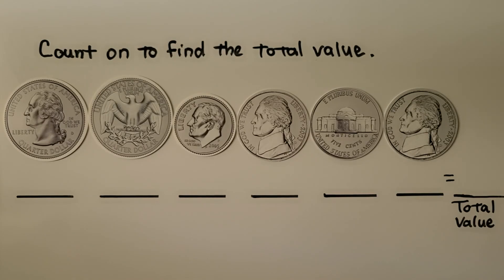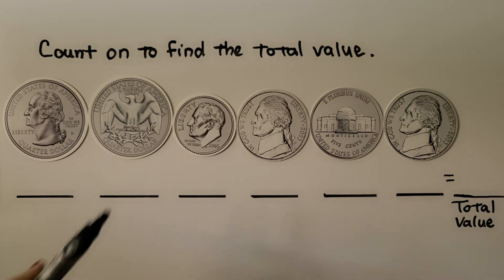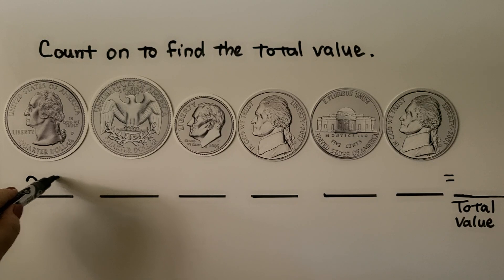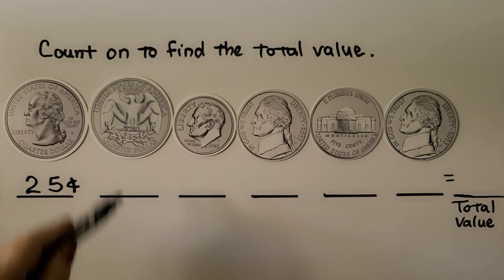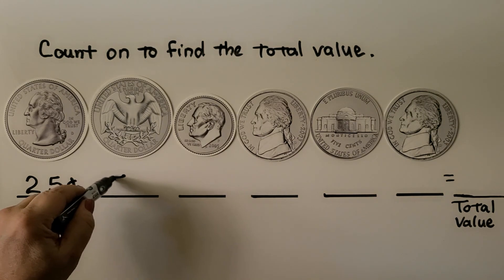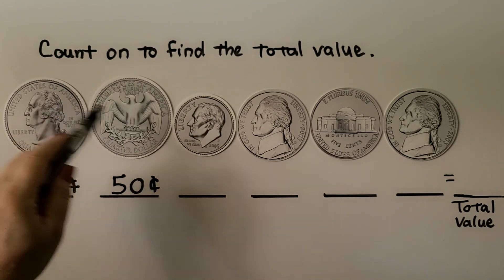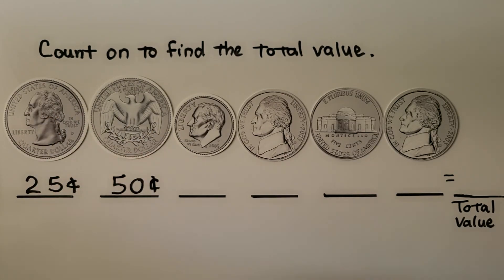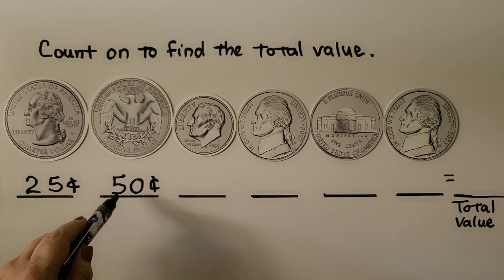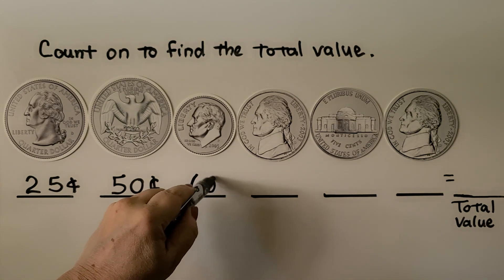Here we need to count on to find the total value. We have one, two quarters. One quarter is 25 cents — do you know what two quarters would be? If you said 50 cents, you're right. Two quarters is 50 cents. So now we're at 50 cents. We're going to add a dime — that's 10 cents. 50 cents plus 10 cents is 60 cents so far.